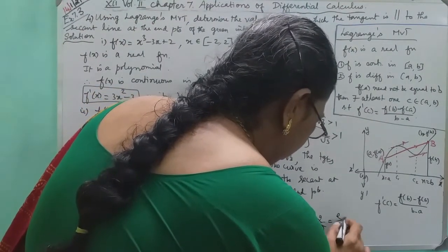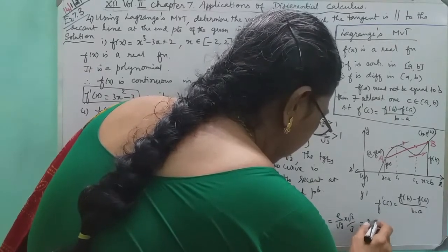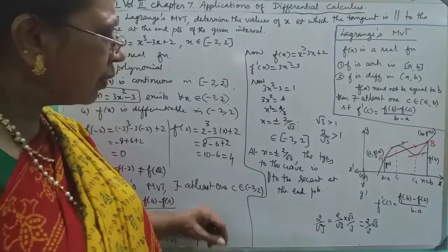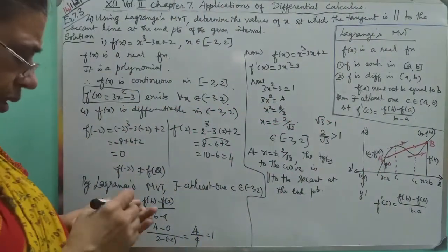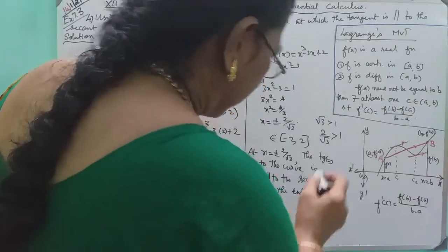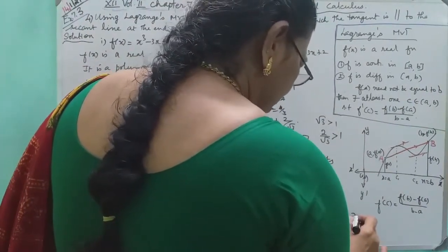2x equals 3. 1.7, 3, 1.7. As you can see, it's 1.732.